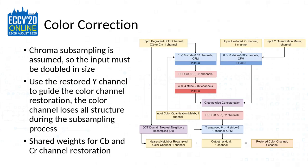For color correction, we use the Y channel as an auxiliary input. We do channel-wise concatenation with the color channel, giving the network structural information from the Y channel, which is much less heavily compressed.